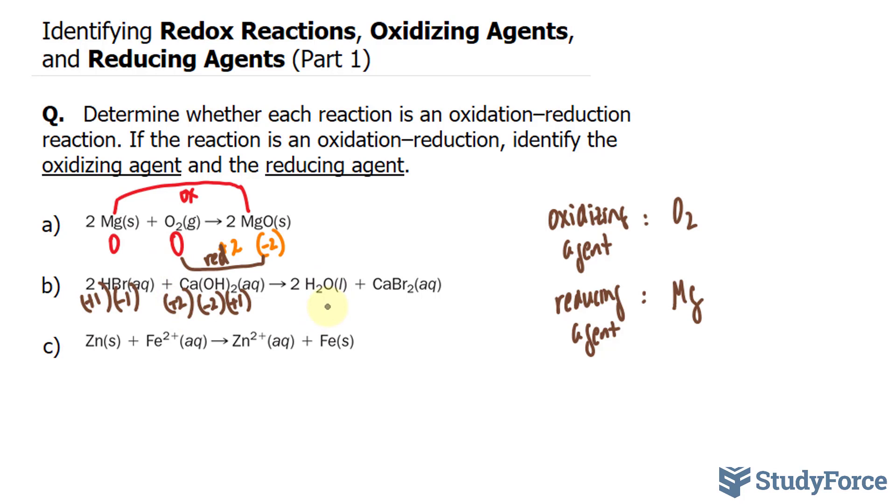The oxygen is minus two, hydrogen is plus one. The bromine is minus one, calcium is plus two. Notice how there is no change in oxidation states from the chemicals in the reactants versus those in the products.